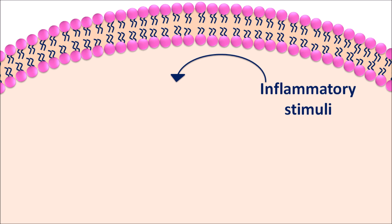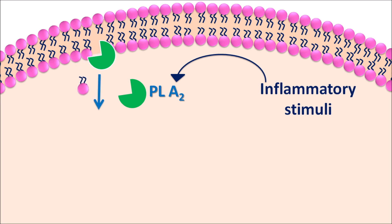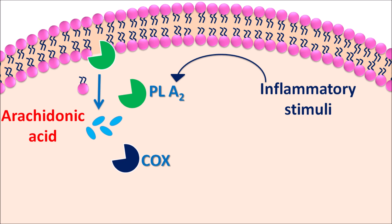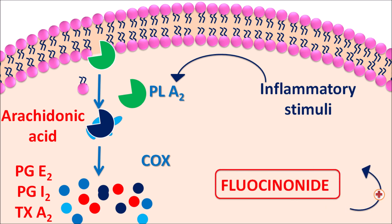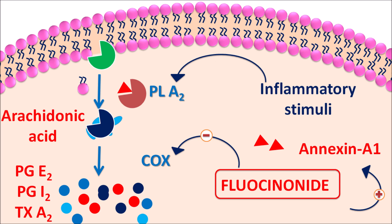When there is an inflammatory stimulus, it activates the enzyme phospholipase A2, a cleavage enzyme that interacts with phospholipids to produce arachidonic acid — a C20 fatty acid. The COX (cyclooxygenase) enzyme then converts arachidonic acid into mediators like PGE2, prostaglandin A2, PGI2, and thromboxane A2, which increase inflammation, redness, and vasodilation leading to swelling and skin rashes. Fluocinonide stimulates annexin-A1 activity, which binds to and inhibits phospholipase A2, thereby inhibiting synthesis of arachidonic acid. Similarly, fluocinonide can directly inhibit COX enzyme activity, inhibiting the synthesis of prostaglandins. All these actions result in an anti-inflammatory response.